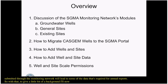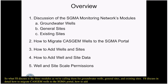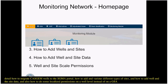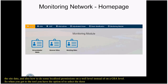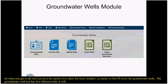The three modules within the monitoring network are: groundwater wells, general sites, and existing sites. I'll discuss how to migrate CASGEM wells to the SGMA portal, how to add wells and various types of sites, how to add well and site data, and how to manage localized permissions on a well level rather than a GSA level. When you access the tool, you can select from the three modules. The groundwater wells tool has five functions: view and edit your data, add new wells, migrate wells, and batch import both wells and data, similar to the CASGEM process.